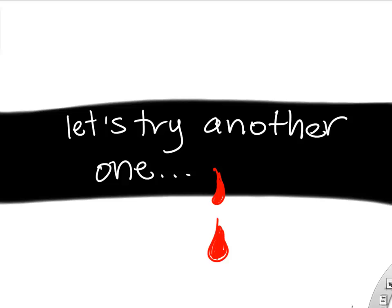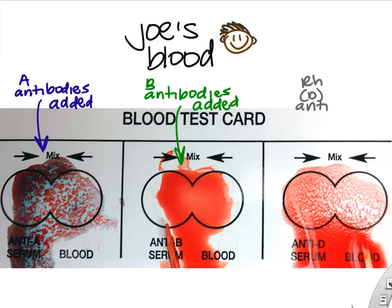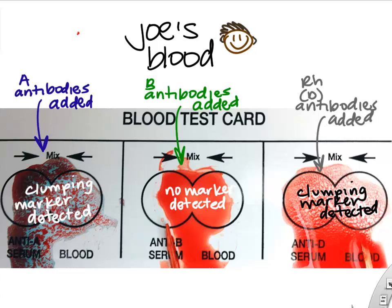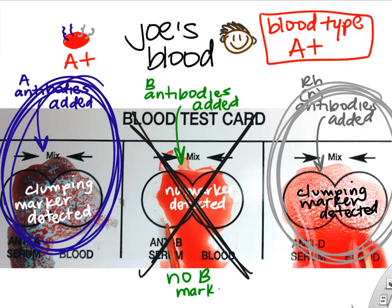Let's look at another example. We have three drops of Joe's blood. We add A antibodies, B antibodies, and RH antibodies, then wait a few minutes to see what happens. The A antibodies cause clumping, which suggests the A markers are present. The B antibodies didn't detect anything. The RH antibodies cause clumping, suggesting the RH marker is present. So in Joe's blood we have the A markers and RH markers, making his blood type A positive. You simply look at which antibodies react — in this case the A and RH reacted, so he has A and RH markers and lacks the B marker.